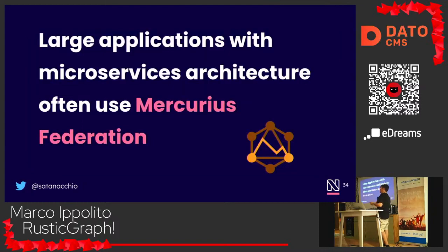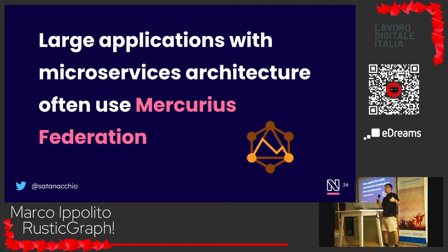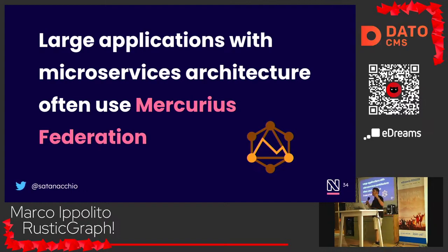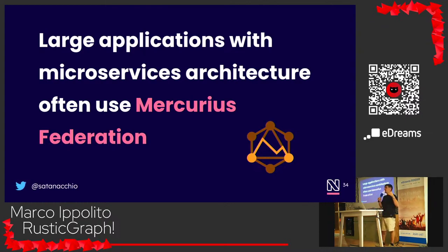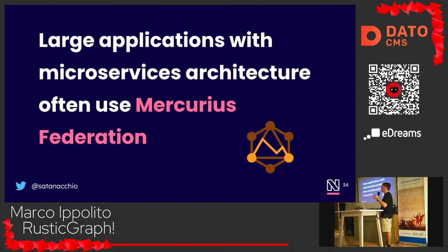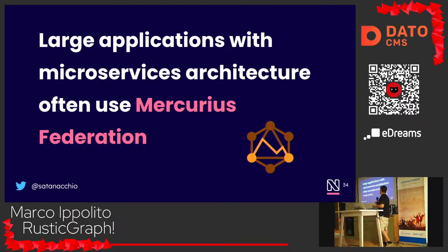When you have a large application, you want to scale and use microservices. Mercurius and GraphQL in general are great because you can split your schemas into microservices, and then have just one gateway that reroutes all traffic to the right microservice.